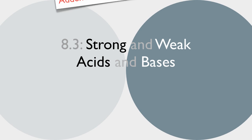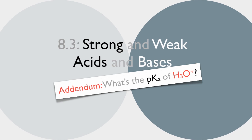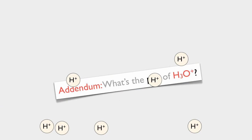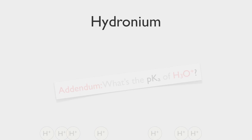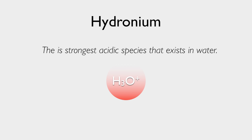This video is an addendum to 8.3, and we'll talk about the pKa of hydronium. Hydronium is, of course, H3O+ ion, and this is the strongest acidic species that can exist in water.